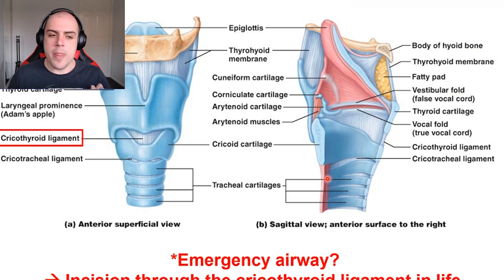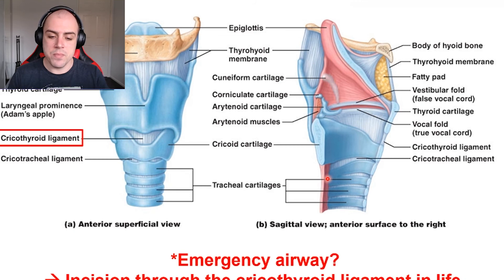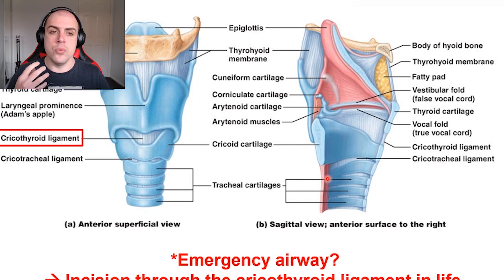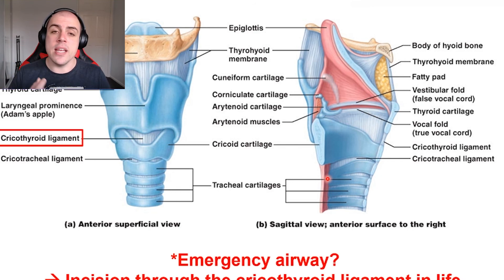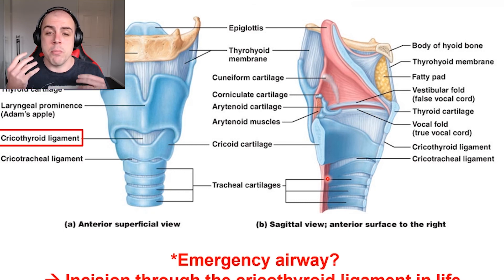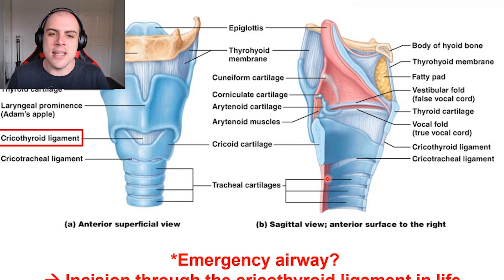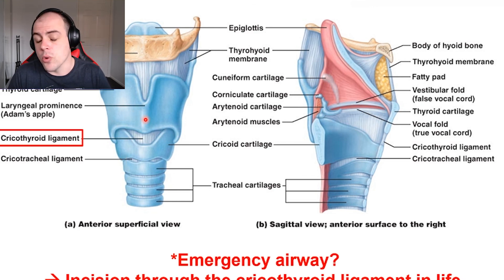Looking at our larynx, there is a key ligament — the cricothyroid ligament. In the event that someone is choking or their airways have completely collapsed and they are unable to breathe at all, an emergency procedure that can be performed is called a tracheotomy. This is essentially the creation of an emergency airway: by making a small incision, you can insert a pipe to help the patient breathe. Unfortunately, a potential side effect is permanent damage to the vocal cords, because it is in the larynx that we find those vocal cords. If in that emergency situation the cut is made slightly too high, we can get damage to the vocal cords.